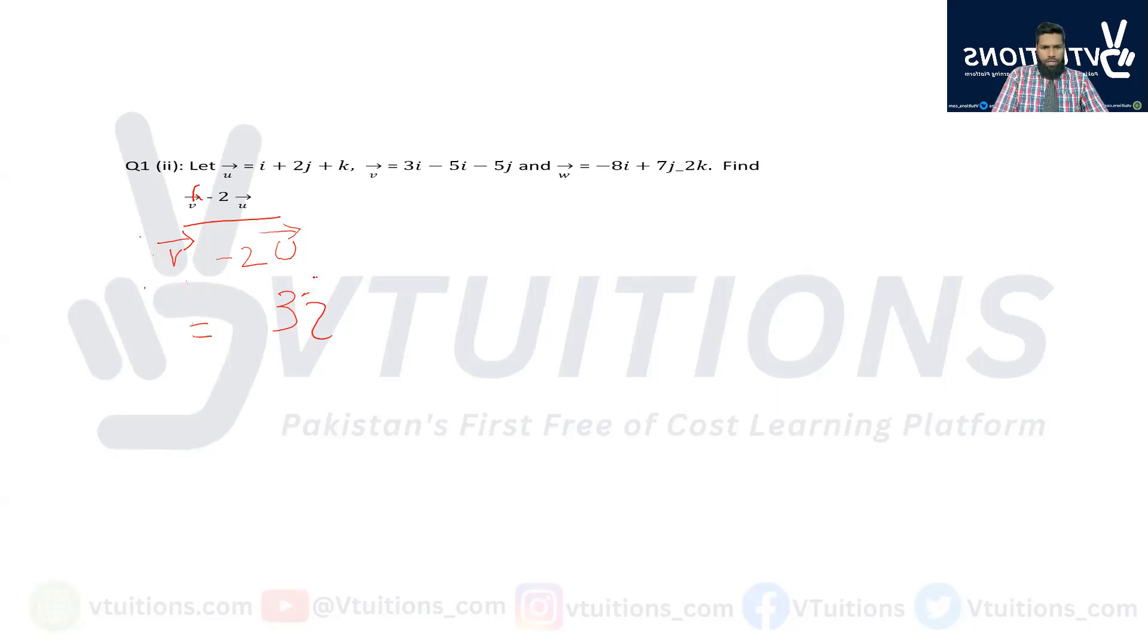All right students. Now we will do this: 3 iota, after that minus 5j. All right, 5j minus 2 into (iota plus 2j plus k). Right students. After that, I will put equal sign here. After equal sign: iota minus 9j or minus 2k.